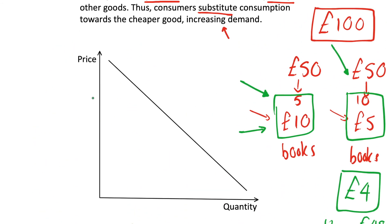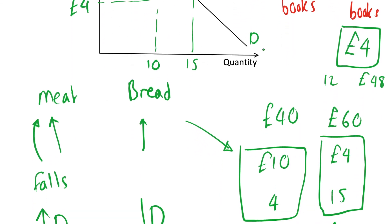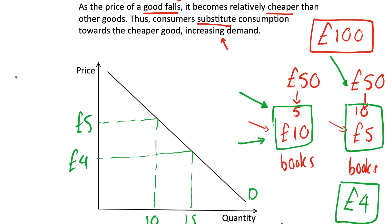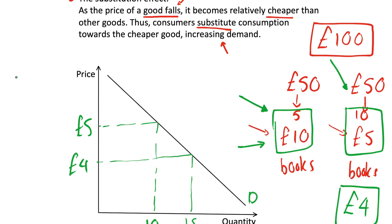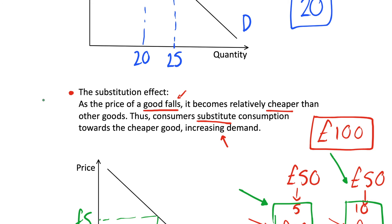We can again plot this on the demand curve, labelled D. Thinking about the five-pound books: we were initially demanding 10 of them, but once the price fell to four pounds we increased our demand to 15, as in our example. Not all of this necessarily came from the substitution effect — some came from an income effect — but decomposing into these two different effects is a topic for a different video as it's a bit complicated.